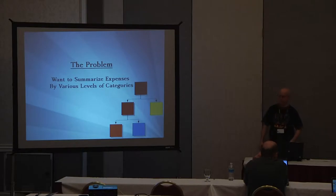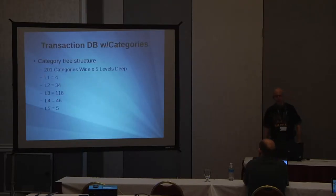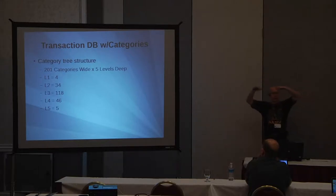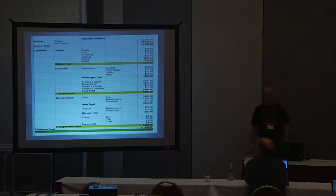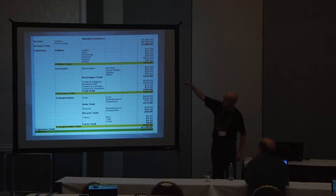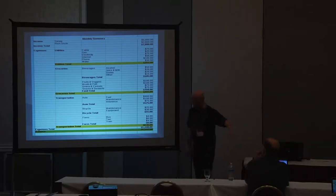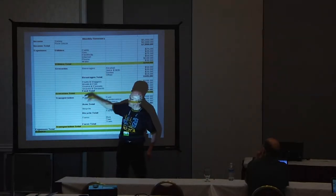My category structure had something like 200 categories wide, and you see the levels of depth here. What you're seeing is a tree where some branches are longer and deeper than others. This is just a cross-section of my category tree. And if you show this to your wife — this is a test — see how long it takes for her to get a headache. All I'm showing here is income, expenses, utilities, groceries, and transportation.